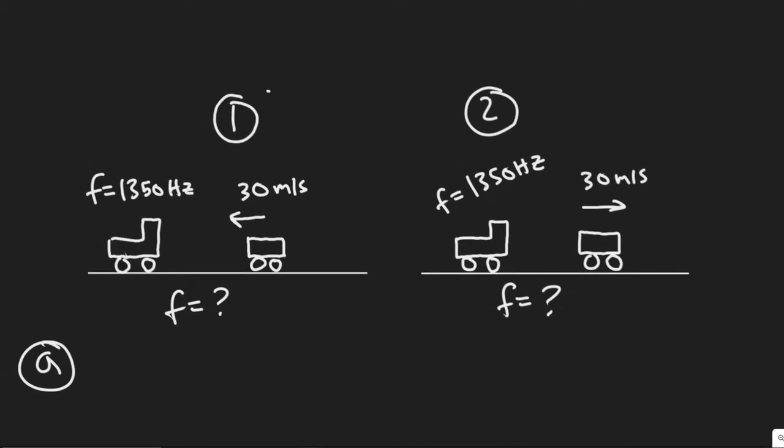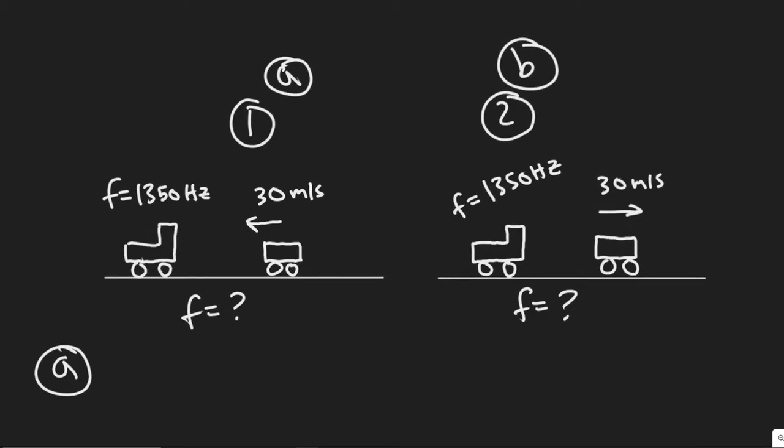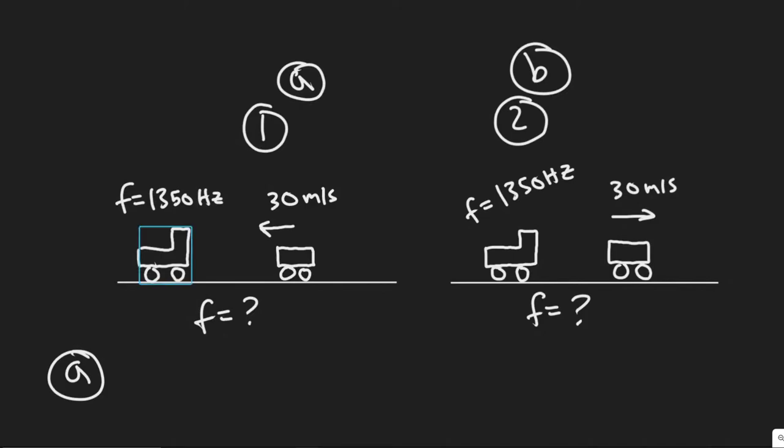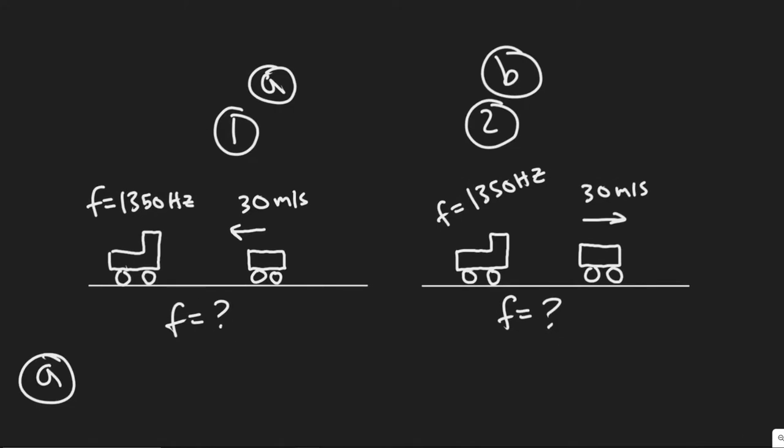So in this problem, we're basically given two scenarios for A and B. I'll call scenario 1A and scenario 2 is B. In both scenarios, we have a firetruck that's going to be at rest, emitting a frequency of 1,350 hertz. The difference between the two problems is we as the observer, we can imagine the car as us, the observer, we're either going to be traveling towards the truck at 30 meters per second or away from it at 30 meters per second.